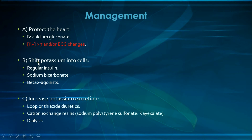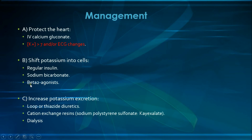The second component is to shift potassium into the cells. We have three options: first, regular insulin — usually given with glucose to prevent hypoglycemia, and this is the fastest way of bringing potassium into the cells; second, sodium bicarbonate to induce alkalosis, thereby shifting more hydrogen ions out of cells in exchange for potassium to go inside; and third, a beta-2 agonist such as Ventolin, given either nebulized or in IV form.